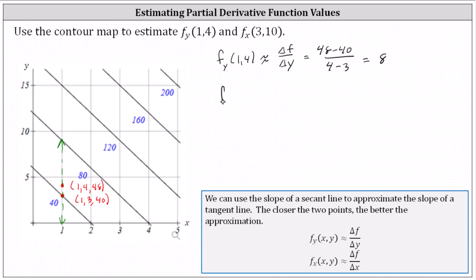Now we estimate the partial of f with respect to x at the point (3, 10). The first step is to locate (3, 10) on the contour map. The ordered triple is (3, 10, f), where we estimate the function value, which is between 120 and 160, closer to 120 — more precisely between 120 and 130, closer to 130 — I'll say 128.